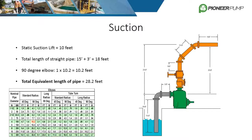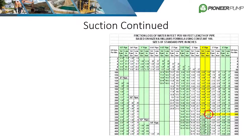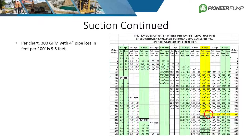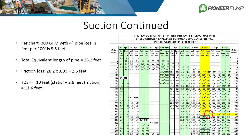Static lift is added on top of friction losses, so it is not included in the friction calculations. The friction factor for 4-inch pipe at 300 gallons per minute is 9.3 feet per 100 feet of pipe. Dividing by 100 gives 0.093 feet of head lost per foot of pipe. Multiplying 0.093 by the total equivalent length of 28.2 feet gives 2.6 feet of friction loss. The total dynamic suction head is the static lift of 10 feet plus the friction loss of 2.6 feet, totaling 12.6 feet.